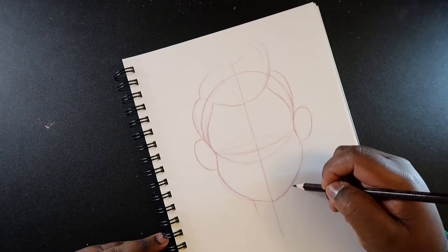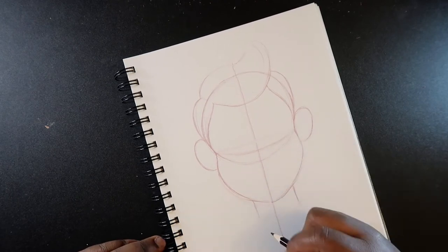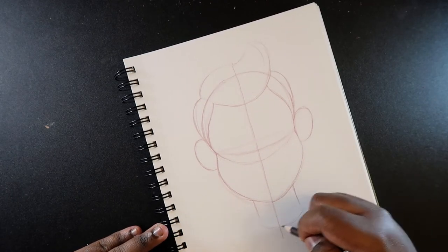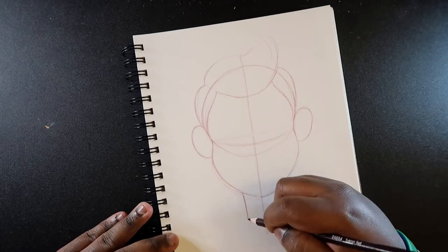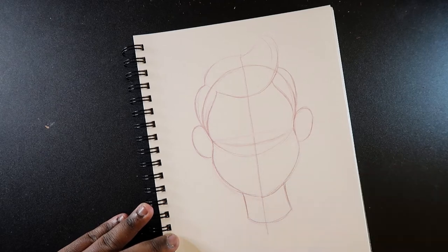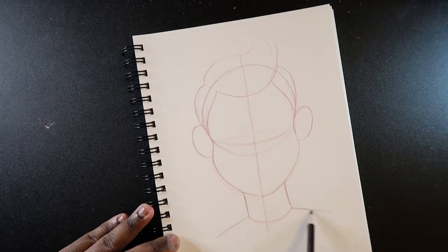Now we're going to draw the neck. The neck is basically a cylinder. Sometimes I like to manipulate the shape of that, but the majority of the time it is a cylinder. Then just draw in a little shirt.